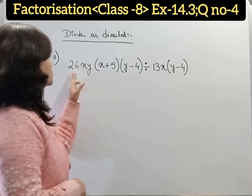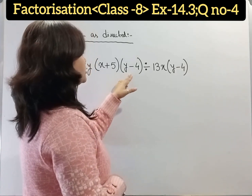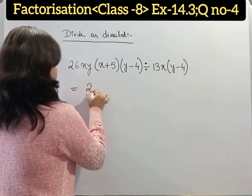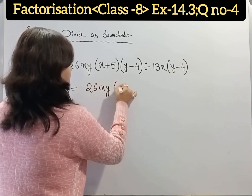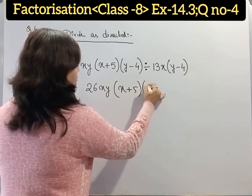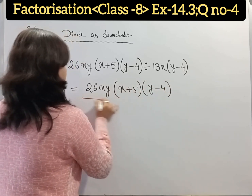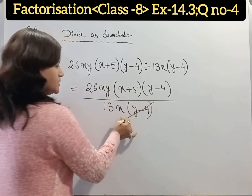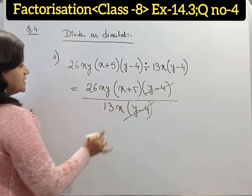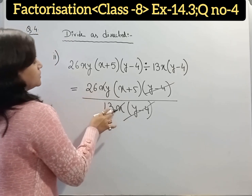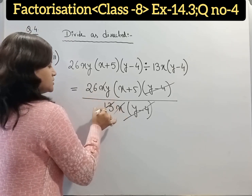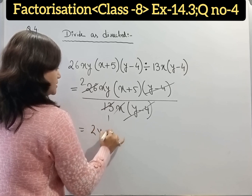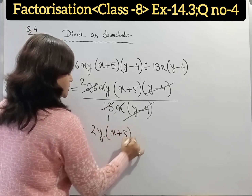Second question: 26xy times (x + 5) times (y - 4) divided by 13x times (y - 4). Now, (y - 4) will get cancelled, and x will get cancelled. Now, 13 times 2 is 26, so the answer is 2y(x + 5). This is our answer.